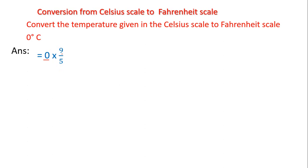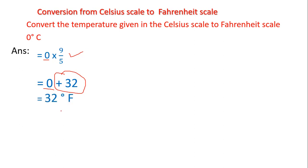We know that 0 multiplied by 9/5 is 0, so I wrote 0 in the second step. After finding the product, we have to add 32 to it. So 0 plus 32 gives us 32 degrees Fahrenheit. Hence, 0 degrees Celsius is equal to 32 degrees Fahrenheit.